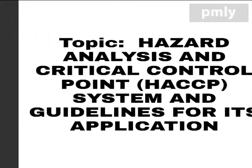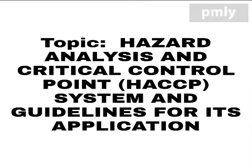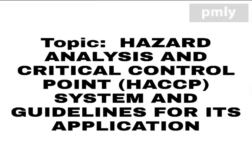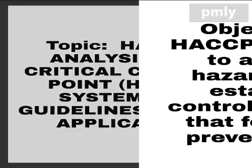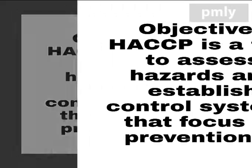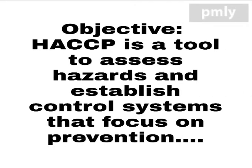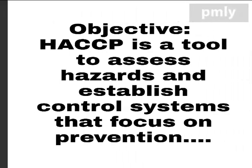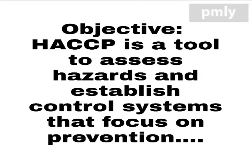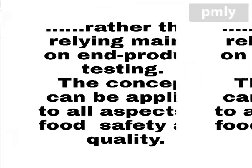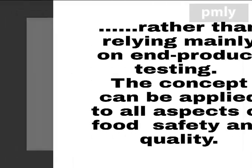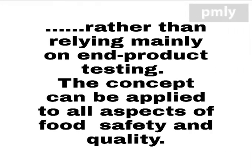Topic: hazard analysis and critical control point (HACCP) system and guidelines for its application. Objective: HACCP is a tool to assess hazards and establish control systems that focus on prevention rather than relying mainly on end product testing. The concept can be applied to all aspects of food safety and quality.